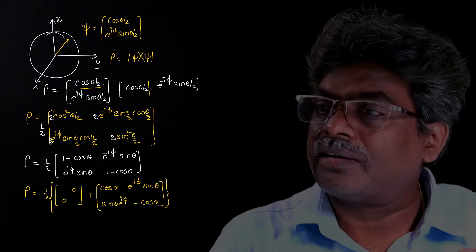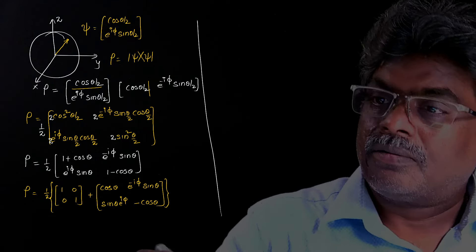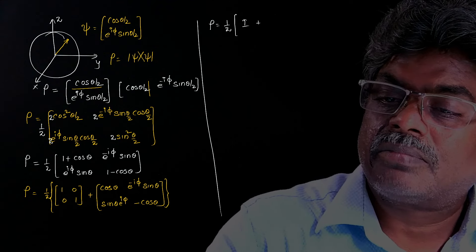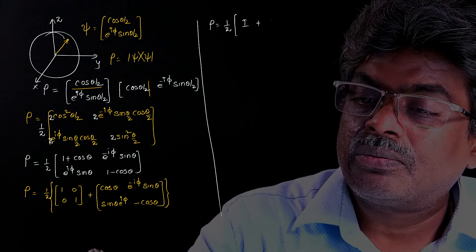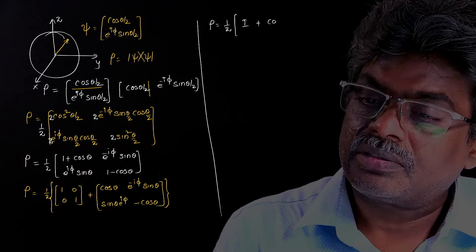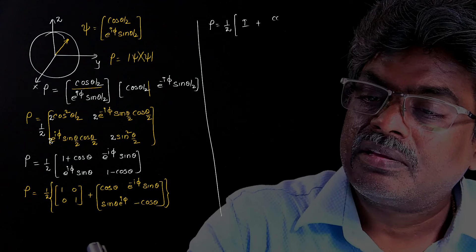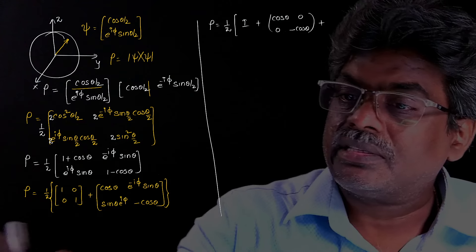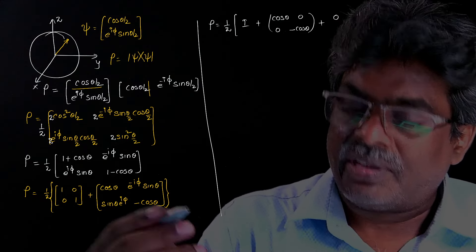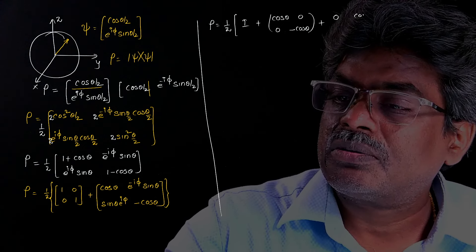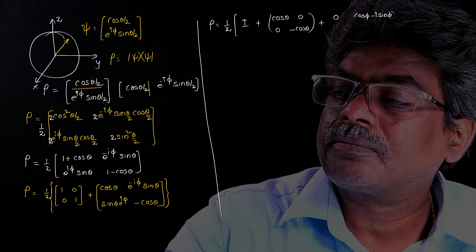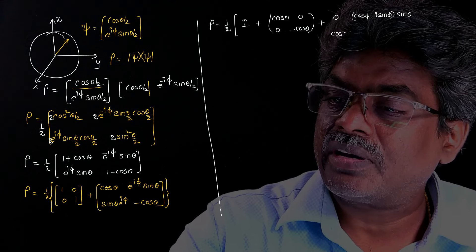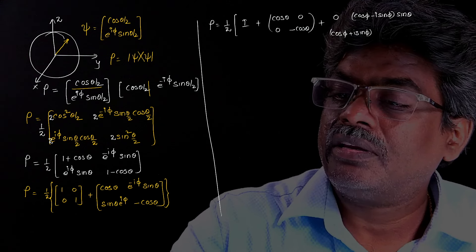Again, I am going to split that second matrix. I am taking cosθ common: that gives cosθ times the matrix (1, 0 / 0, -1). For the next matrix, e raised to minus iφ is cos φ minus i sinφ, so the off-diagonal entry becomes (cosφ minus i sinφ) times sinθ. And the other off-diagonal entry becomes (cosφ plus i sinφ) times sinθ.